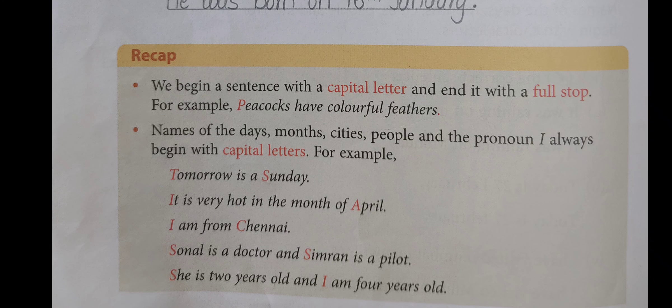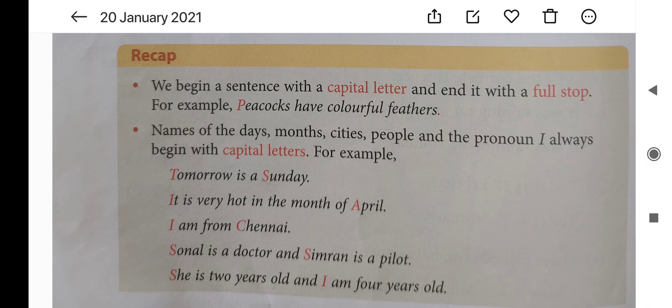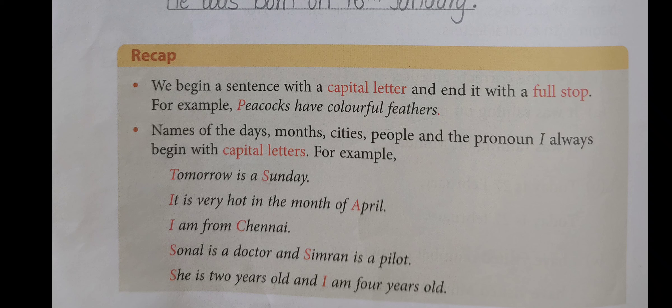Like this. So, we begin a sentence with the capital letter and end with the full stop. For example: Peacocks have colorful feathers. So, 'Peacocks' — P is a capital letter and in the last, it's a full stop. Did you all get it? Whenever we start writing a new sentence, be careful — it should start with a capital letter and end with a full stop.